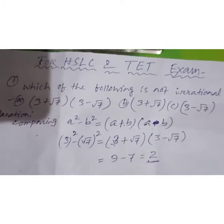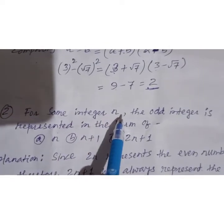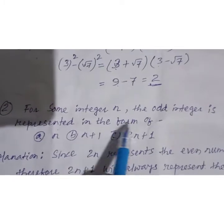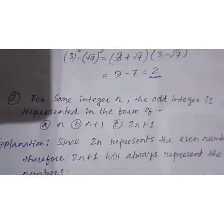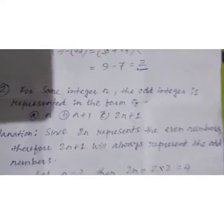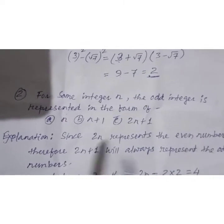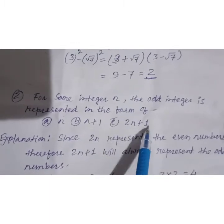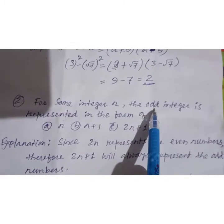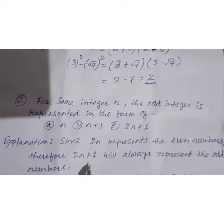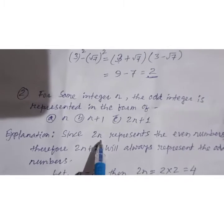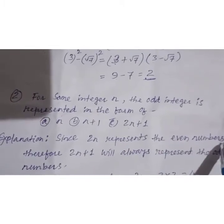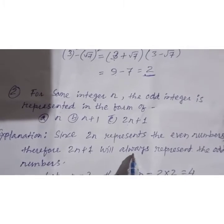Next question: for some integer n, the integer is represented in the form of n, n+1, or 2n+1. Sometimes four options may be given; here only three are shown. The answer will be 2n+1, because this form represents an odd integer. Since 2n always represents an even number, 2n+1 will always represent an odd integer.